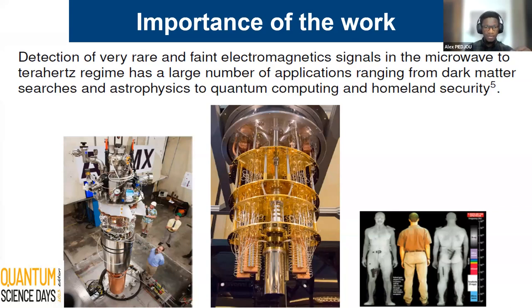Another application is in quantum computing, especially the readout and control of the qubit. And also in Homeland Security. The infrared techniques and other techniques, emergency systems, may not be able to give us a clear view or a clear image of maybe a concealed weapon device. Microwaves will help to detect this concealed weapon device. Since in the microwave region, the microwaves can penetrate under the clothing and give us a clear view of the hidden device.